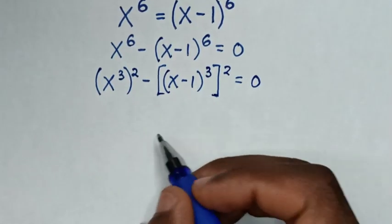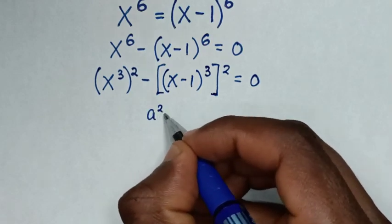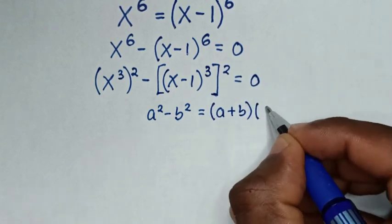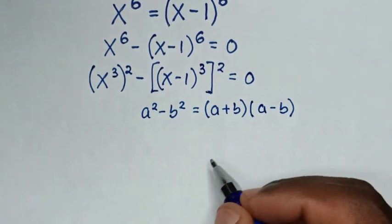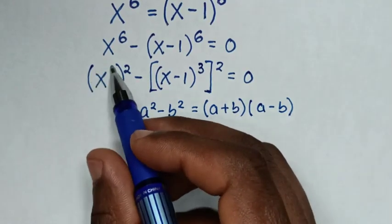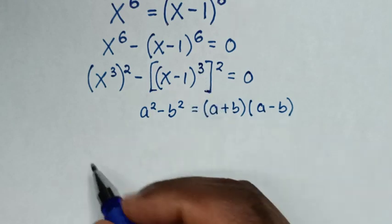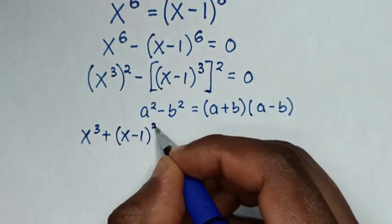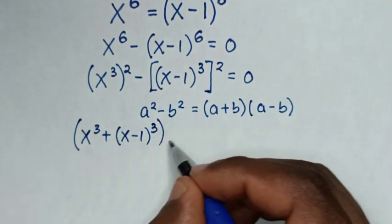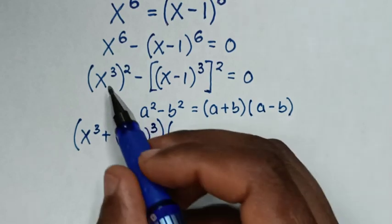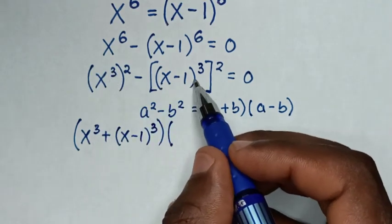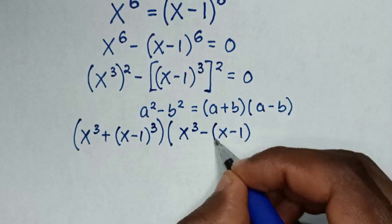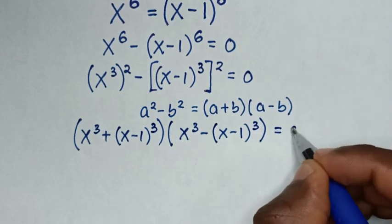Now we apply the difference of squares rule: a² minus b² equals (a plus b)(a minus b). So it will be (x³ plus (x minus 1)³) times (x³ minus (x minus 1)³) equal to 0.